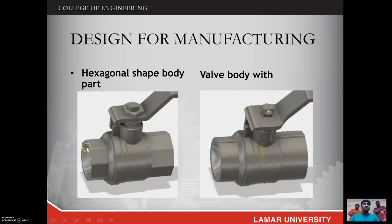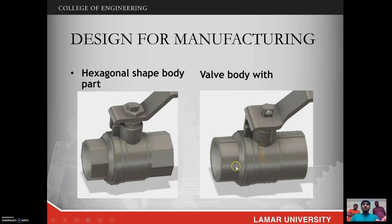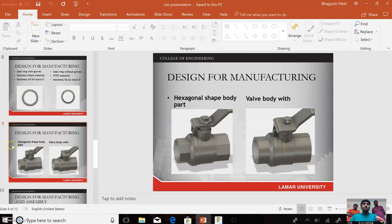The second change is to the body shape. Originally it had a hexagonal body, and we changed it to a cylindrical shape. The hexagonal body is manufactured by casting, which is costly, but the cylindrical shape can be manufactured on a lathe machine, which reduces cost significantly.